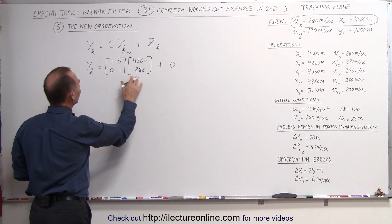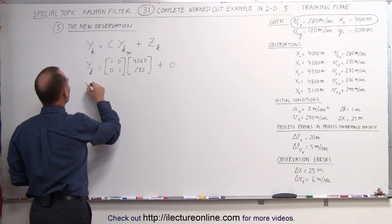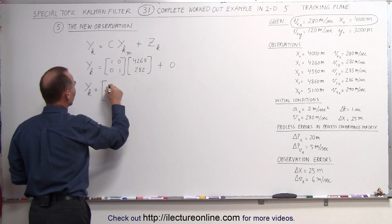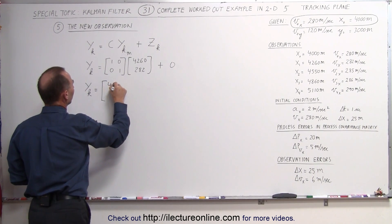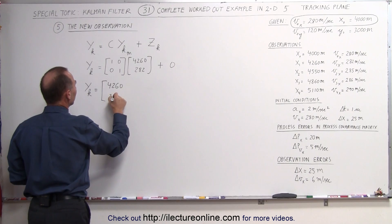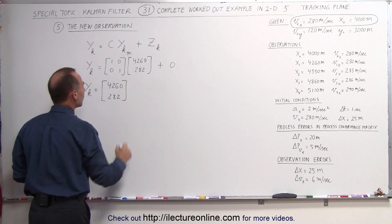We multiply this times this and we get the new matrix. The new observation for position is 4,260, and the new observation for velocity is 282.